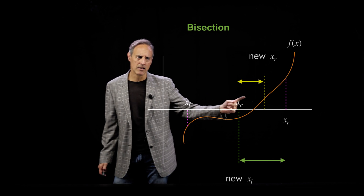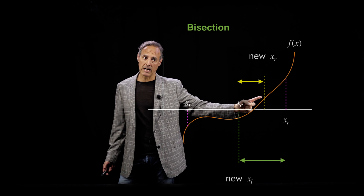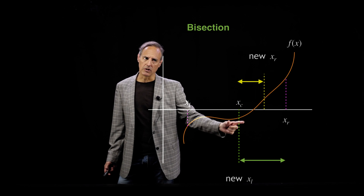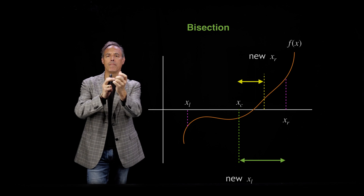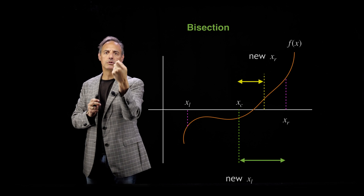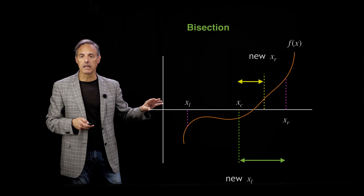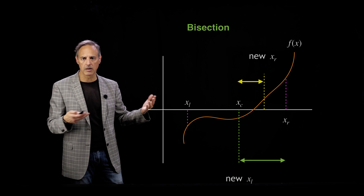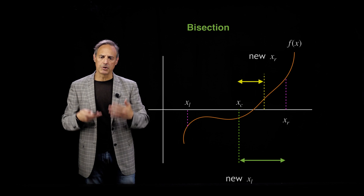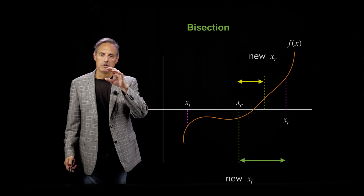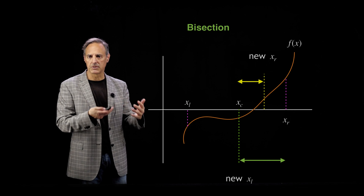If I cut this interval in half, I'm now here — notice the value of the function is still positive on that side, meaning it's between this yellow and this green. I've pinched this in. The whole idea of root finding is to shrink the interval and trap the point so you can zero in on it. We keep cutting it in half — that is a for loop.